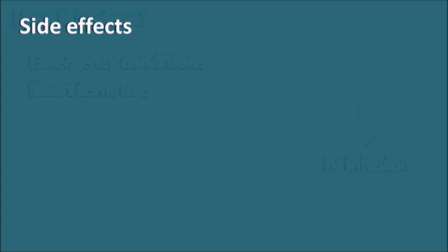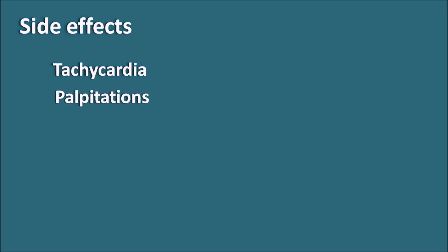Side effects of Dobutamine: Since Dobutamine mainly increases the force of contraction but at a high dose can also slightly increase the rate of contraction, the side effects are related to the increase in heart rate. It can produce tachycardia as well as palpitations — awareness of the heartbeat. At higher doses, as the rate and vasoconstriction increase, blood pressure may also be slightly increased.